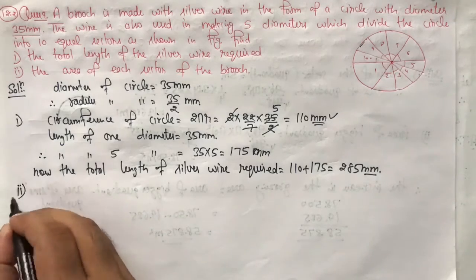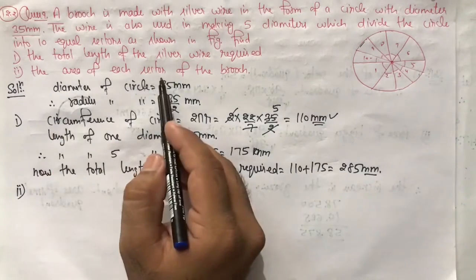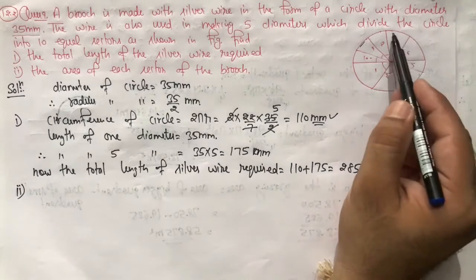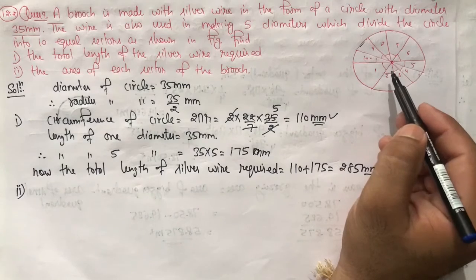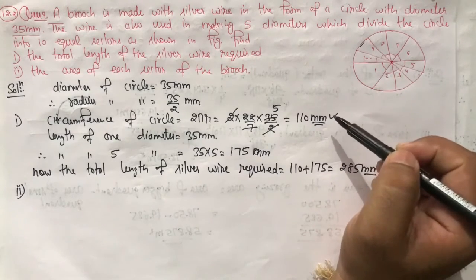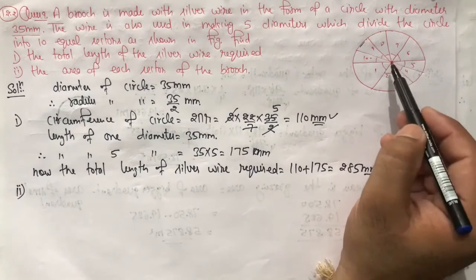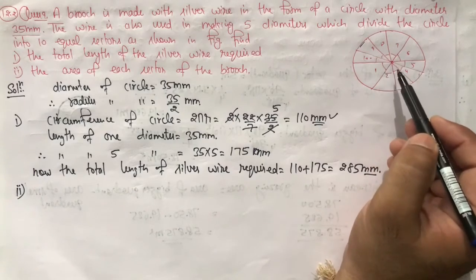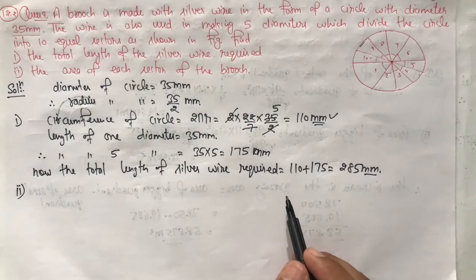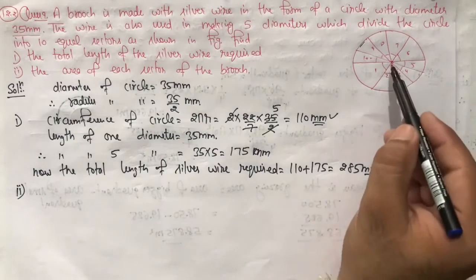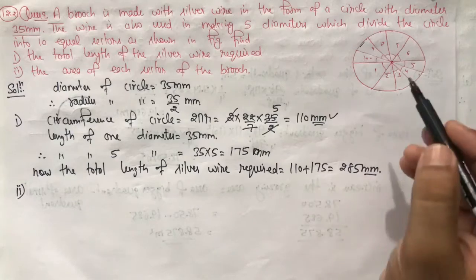Second question: the area of each sector of the brooch. The brooch sectors are all equal because it is divided into 10 equal parts. To find the area of each sector, we need to find the angle. When we find the area of a sector, we need the angle.